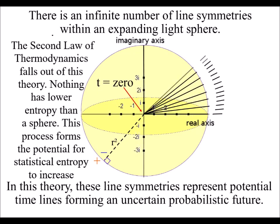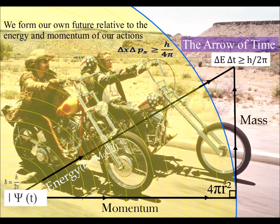In this theory, these line symmetries represent potential timelines forming an uncertain probabilistic future.